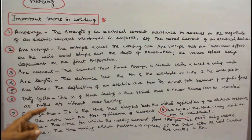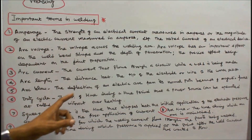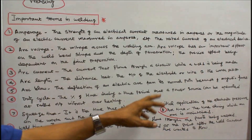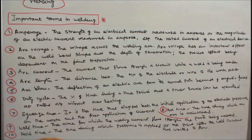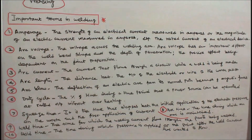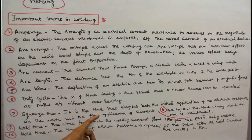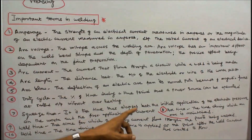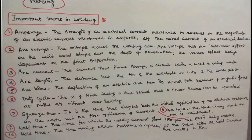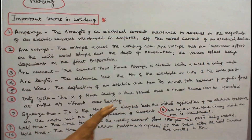Duty cycle: the percentage of time during a time period that a power source can be operated at rated output without overheating. Squeeze time: the time that elapses between the initial application of the electrode pressure on the work and the first application of current.